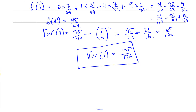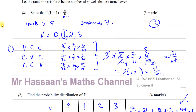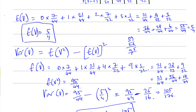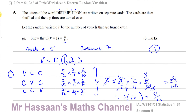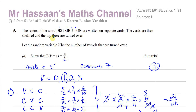You can leave the variance as the exact fraction 105/176 — there's no need to convert to 3 significant figures unless the question specifies. So E(V) = 5/4 and Var(V) = 105/176 — that completes this question. Other questions from this Solomon H S1 paper and from the discrete random variables topic will be in the playlists shown. Subscribe to the channel and thank you for watching.